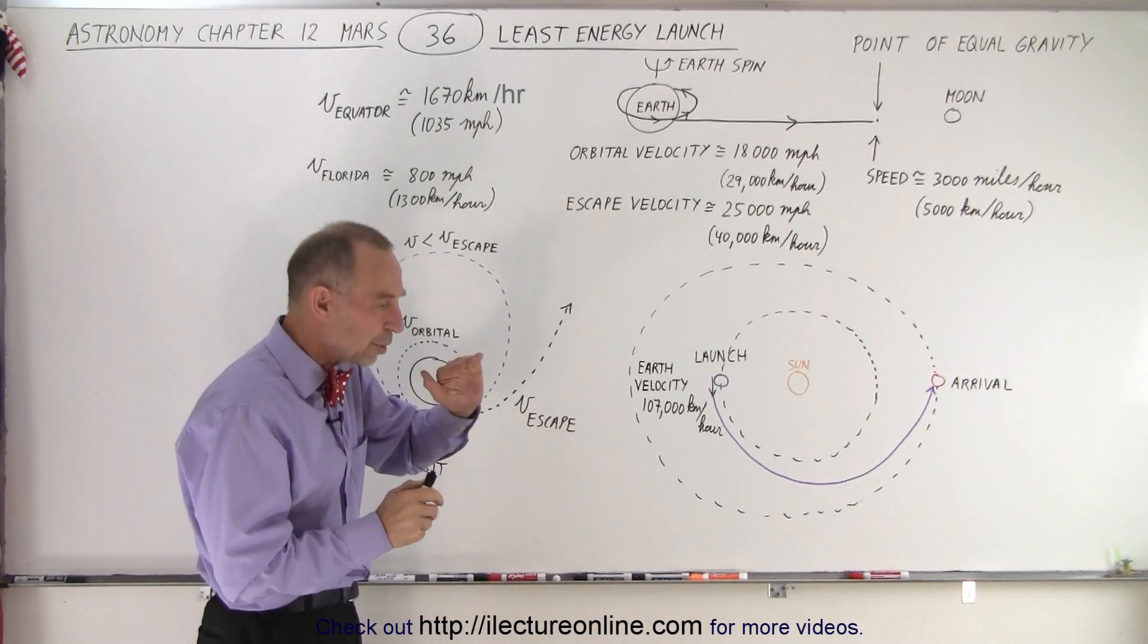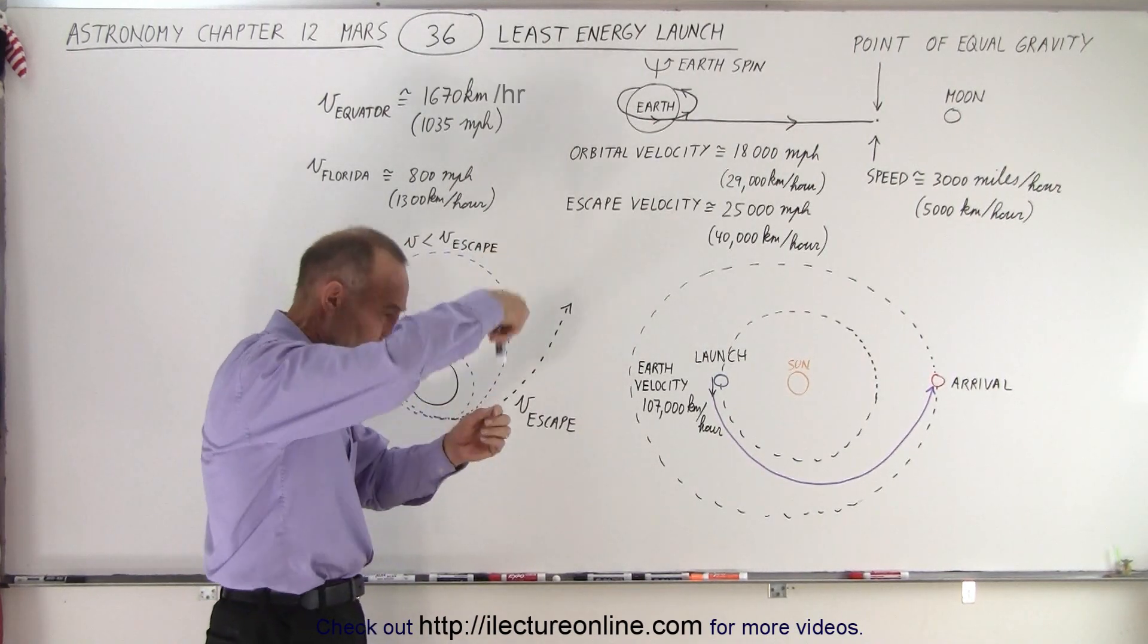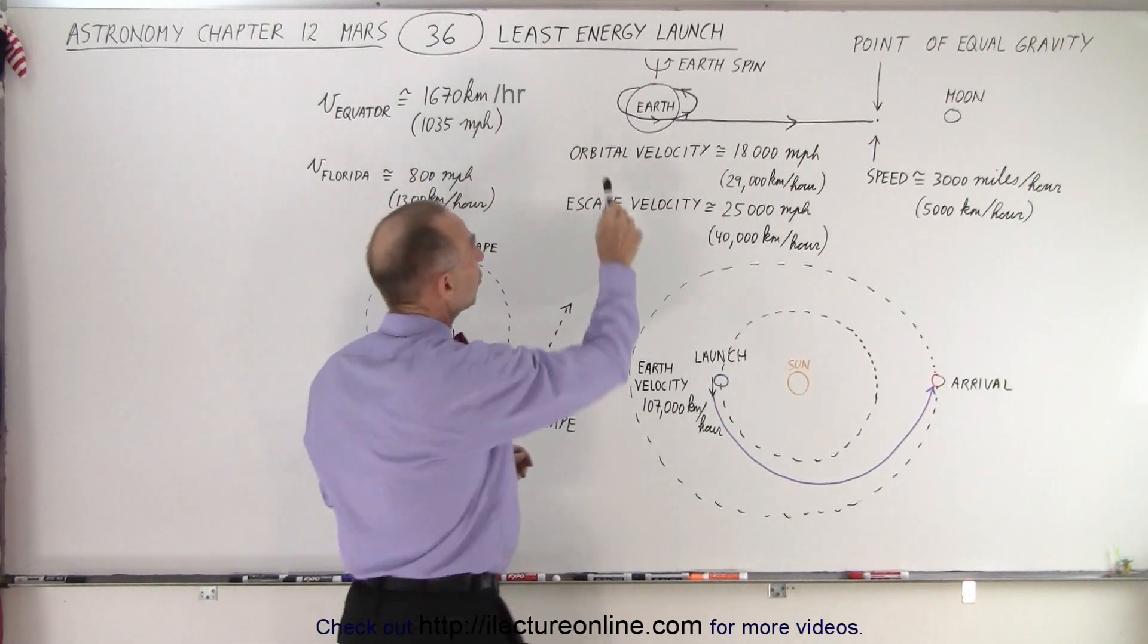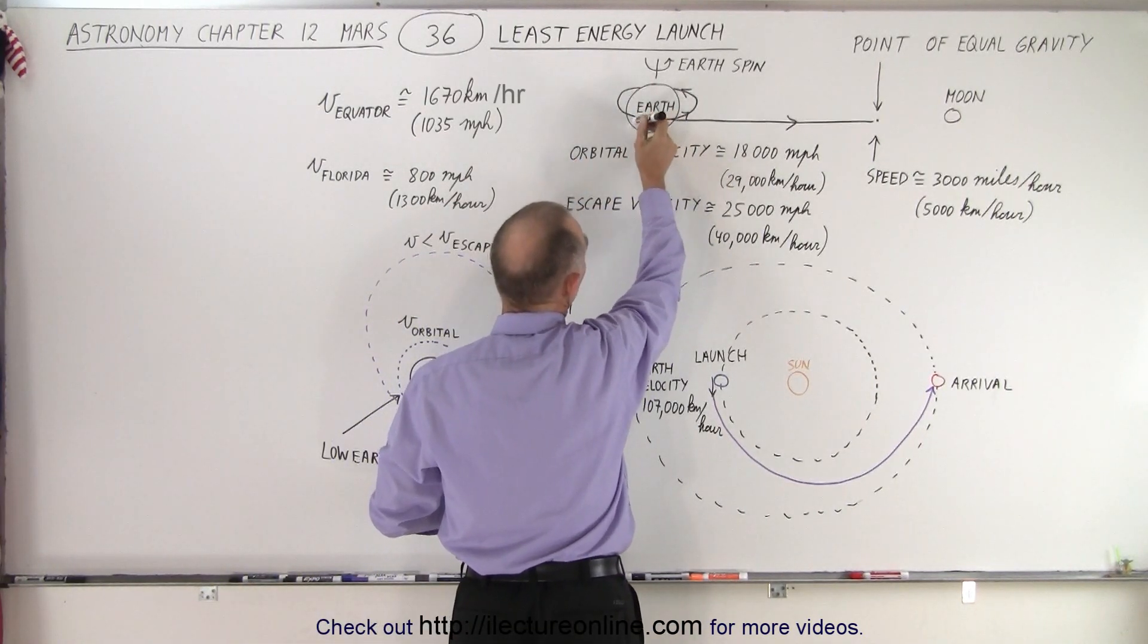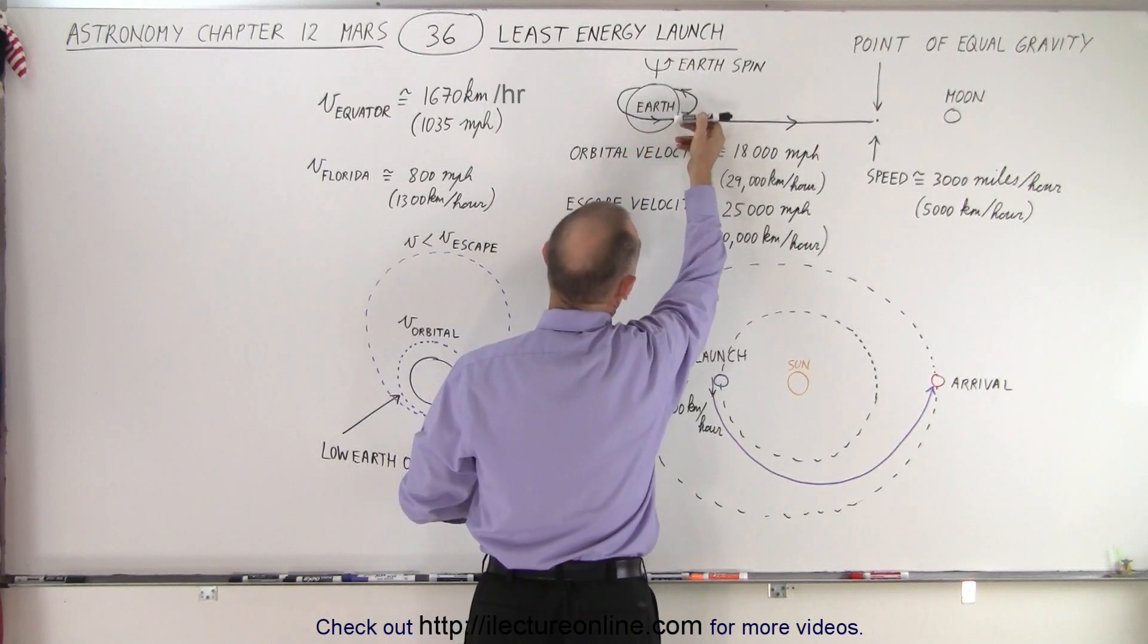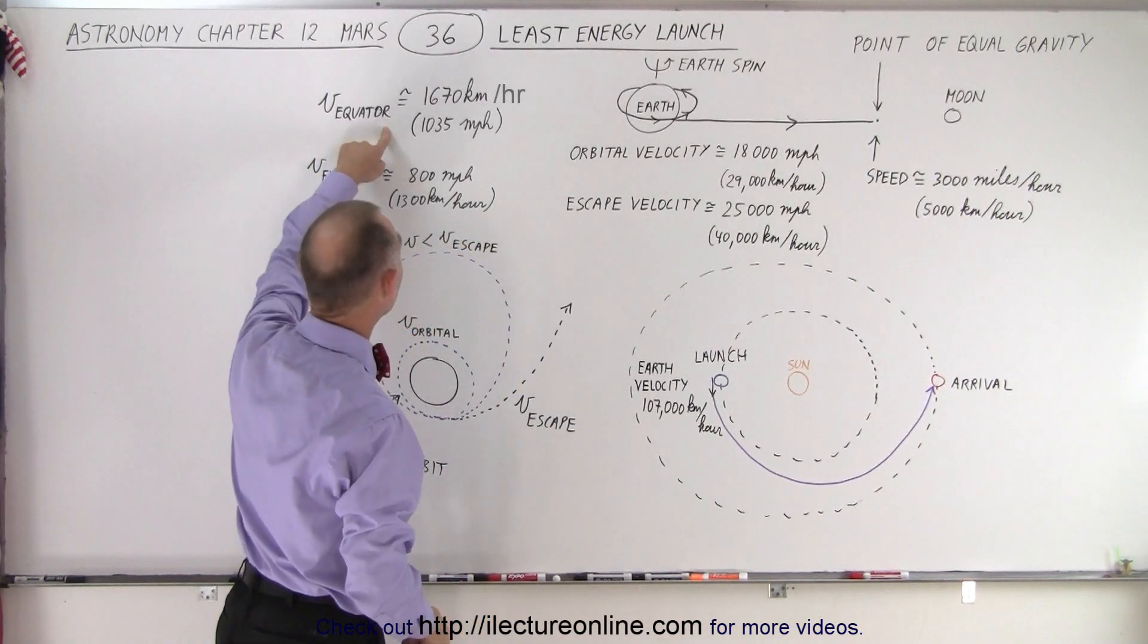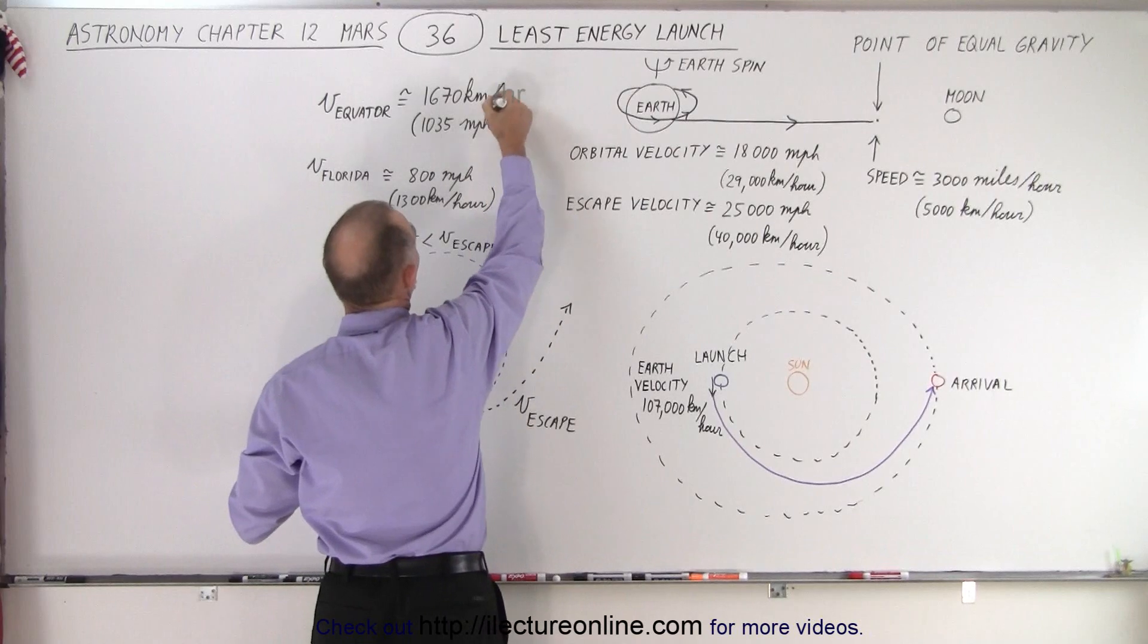If you take off from the earth in the same direction that the earth is spinning—from looking from the north, the earth is spinning in a clockwise direction—you already have that initial speed of the rotation of the earth. Earth at the equator, that is about 1670 kilometers per hour.